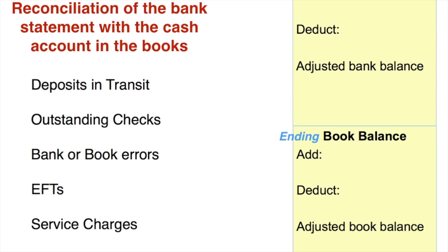We're going to start with the ending balance per the bank statement as well as the ending balance per your books or the cash account. There are things that are going to add to the bank's balance and things that are going to add to your book balance. The way I always like to think about it is: think about who knows about it. If someone doesn't know about it, that's the one that's going to have to adjust for it.